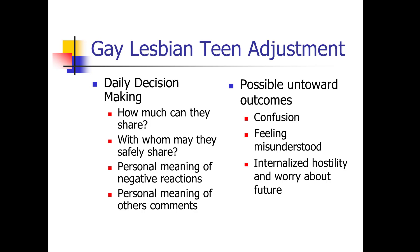Teen adjustment includes daily decision making: how much can they share, with whom may they share safely, what is the personal meaning of negative reactions they might encounter, and what are the personal meanings of others' comments. Possible untoward outcomes can include ongoing confusion, feeling misunderstood, and internalized hostility and worry about the future.